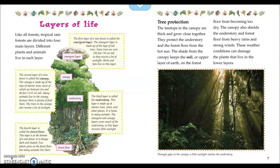The second layer of a rainforest is called the canopy. The canopy is made up of the tops of shorter trees, most of which are between 10 and 40 feet tall. Many animals live in the canopy because there is plenty of food there. The trees in the canopy also receive a lot of sunlight.